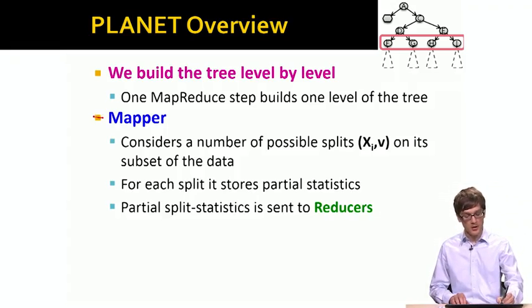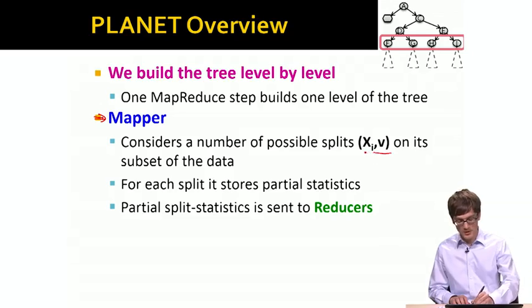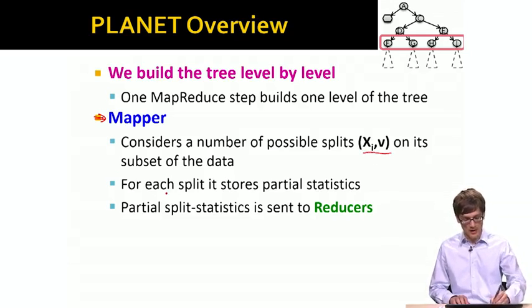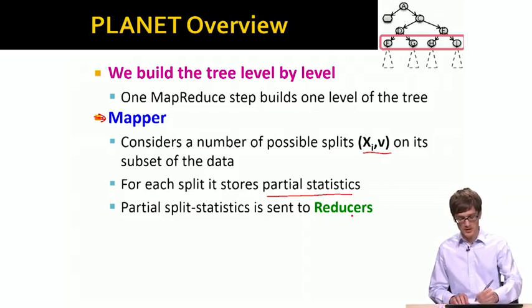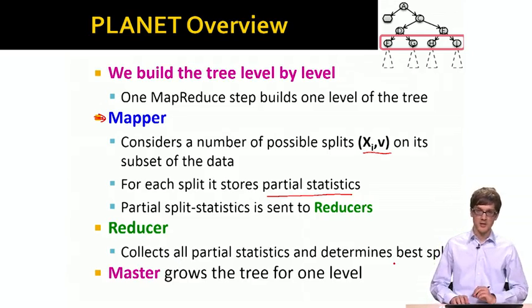In particular, at high level, the mapper, what it will do? It will consider a number of possible splits on a given subset of data. And for each split, it will store the partial statistics, so that then the partial statistic is sent to the reducer. The reducer collects the partial statistics and determines the best split.